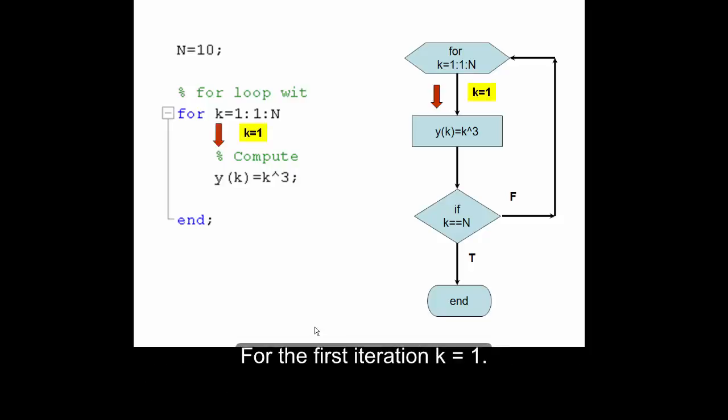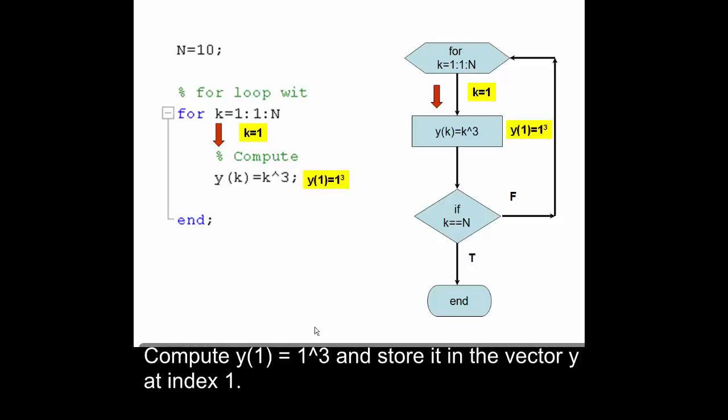For the first iteration, k equals 1. Compute y(1) equals 1 cubed and store it in the vector y at index 1.